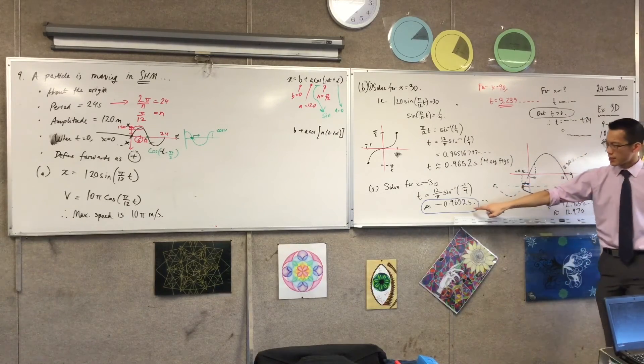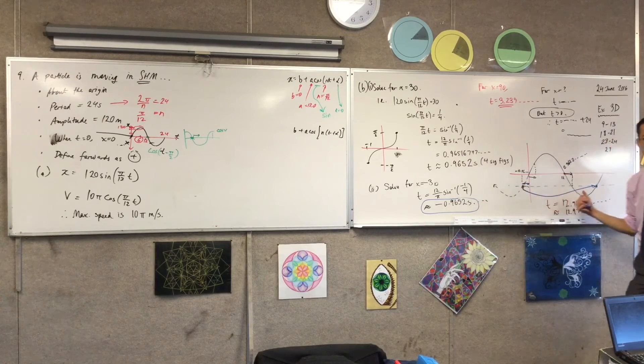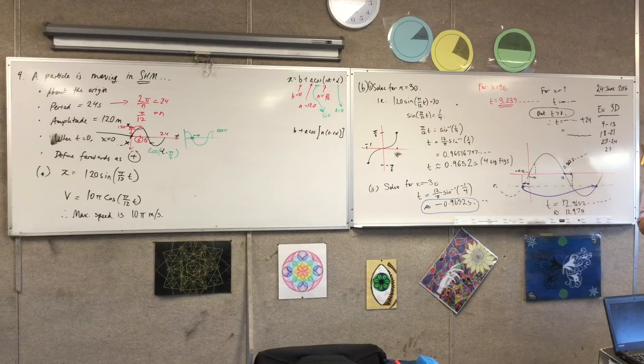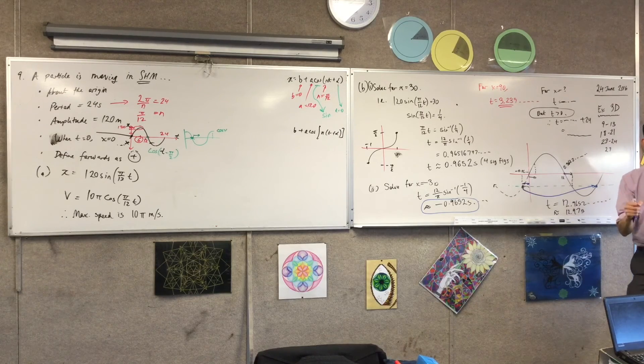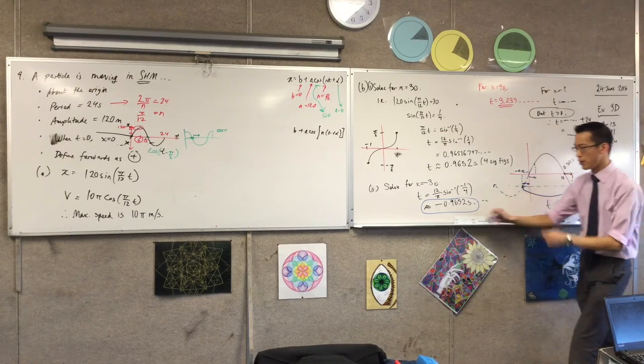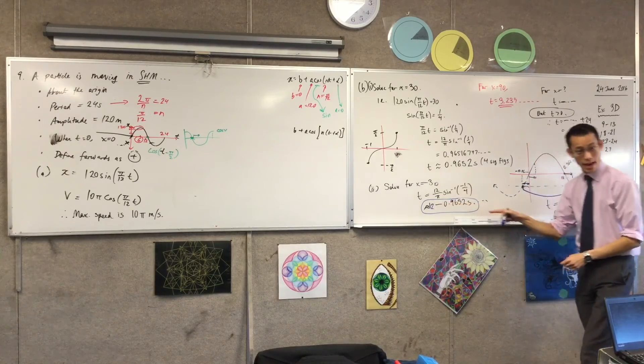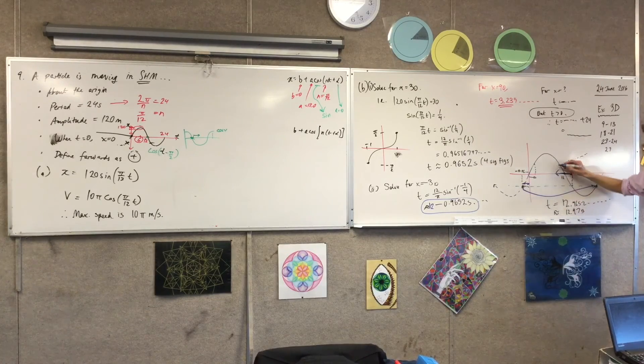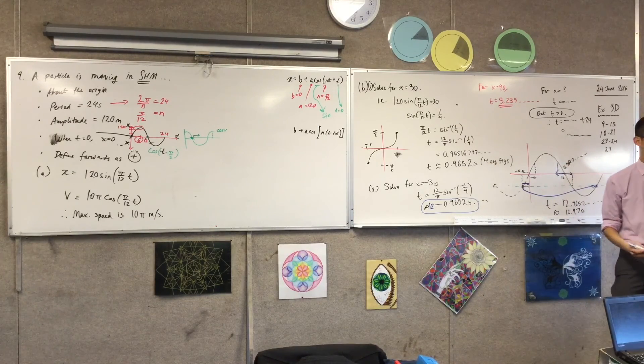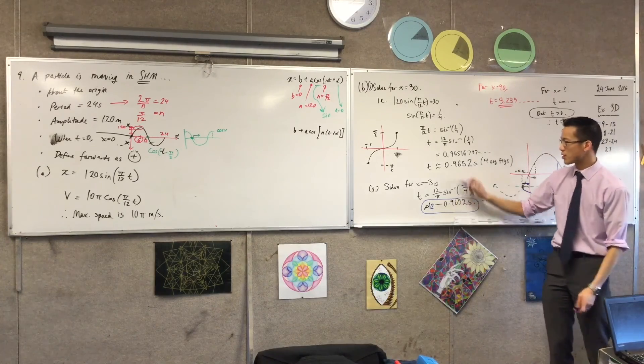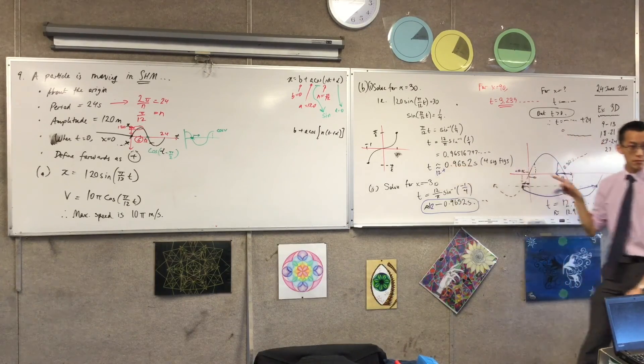If I added 12 to this, where would I be? On the graph, where would I be? The second time that you get to 30. Very good. I would be at the second time I'm 30 meters to the right. Because look, if I put in 12 minus that, there's 12 minus that. See, I've gone backwards in time, which is here, the second time I'm 30 meters to the right. 12 plus that? Yes. Correct. So it's really 12 plus this. Does that make sense?